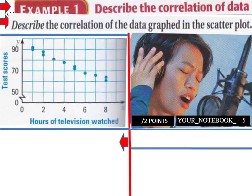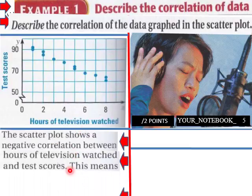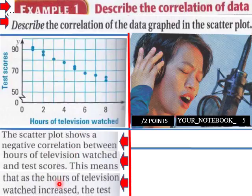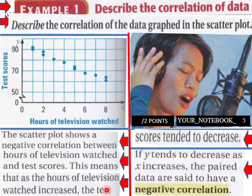Now example one. Describe correlation of data here. So we have this situation here. Guess what that is? Test scores and then hours of TV watched. Scatter plot shows negative correlation between hours of TV and test scores. More TV watched, less test scores. So scores tend to decrease. If y tends to decrease as x increases, the paired data are said to have negative correlation.